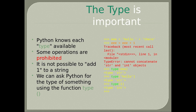We can ask Python for the type of something using the function type(). For example, type(eee) will give type string. If you type eee = eee + 1, an error will appear since it is not possible to add numbers to strings. type('hello') gives type string, and type(1) says it is an integer.